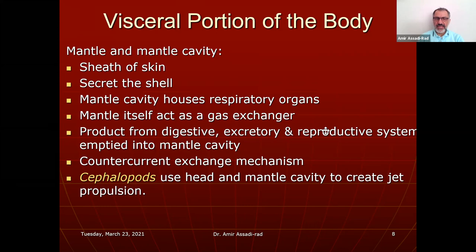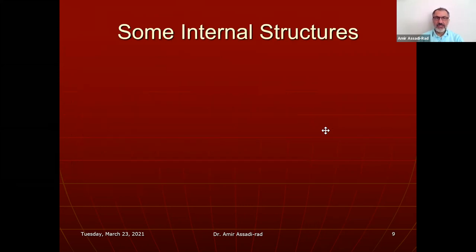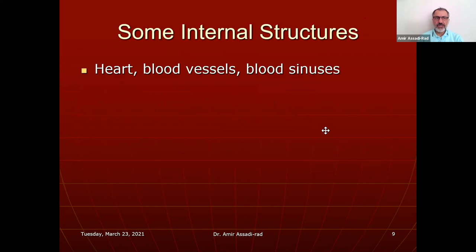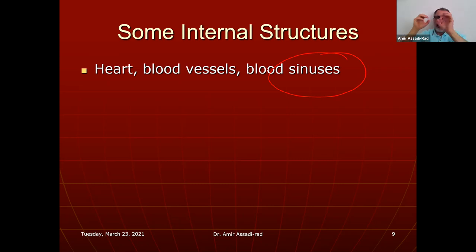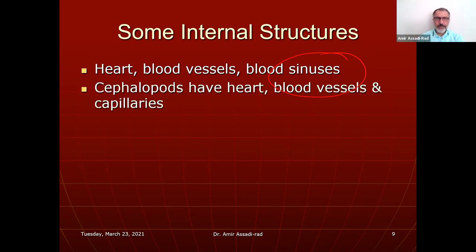Cephalopods use the head and mantle cavity to create jet propulsion. Internal structures include the heart, blood vessels, and blood sinuses — those openings where blood flows. An exchange of gases and nutrients occurs between the blood cells and the cells of the brain, liver, and muscle.